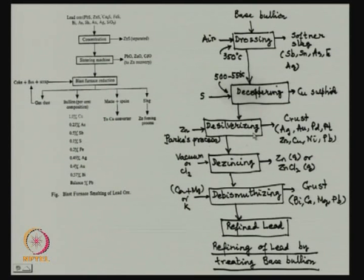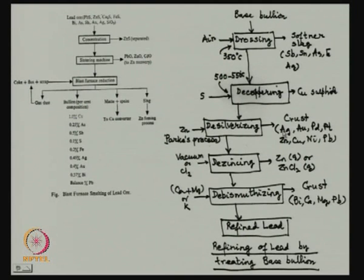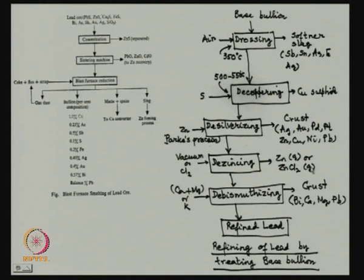Then it goes to a desilverizing step — a very famous process called the Parkes process, which will come again and again in many metallurgical steps. If you add zinc, zinc takes out all the precious metals and forms a solid crust that separates out. Then there may be excess zinc added to the lead, so either the zinc is separated by vacuum, or we can add chlorine, which will form zinc chloride — also a vapour. After dezinking, it goes for bismuth recovery. The standard technique for removing bismuth is addition of calcium and magnesium or potassium, which form intermetallic compounds with bismuth, forming a crust that goes off.